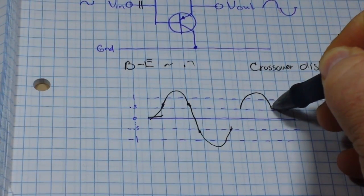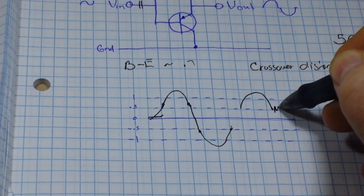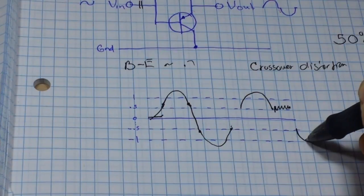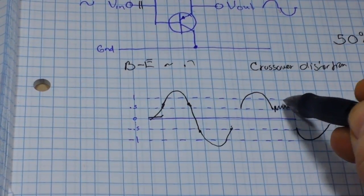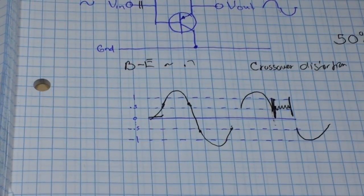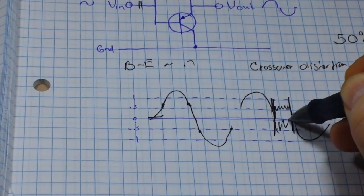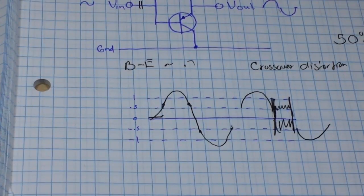We're going to have a positive going portion, and then there's going to be nothing here, and then our negative going portion. So this time period where we are crossing through the zero point, there's a missing part of the signal, and that's where we get into crossover distortion.